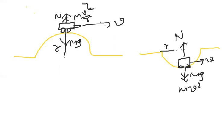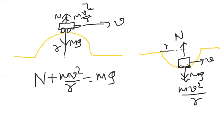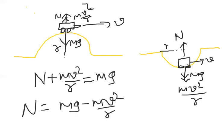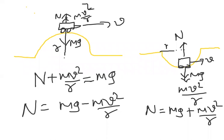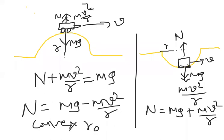For the convex road case, balancing upward and downward forces gives: normal reaction N = mg − mv²/r. For the concave road case, N = mg + mv²/r. So in the first situation (convex road), normal reaction is mg minus mv²/r, and in the second situation (concave road), it is mg plus mv²/r.